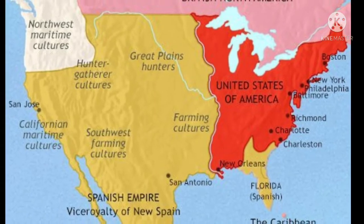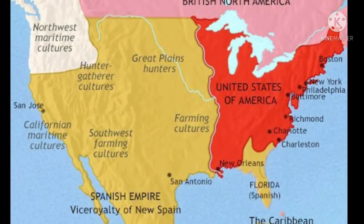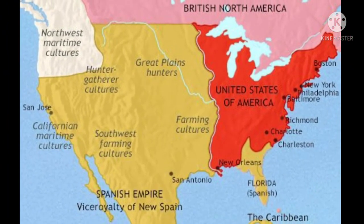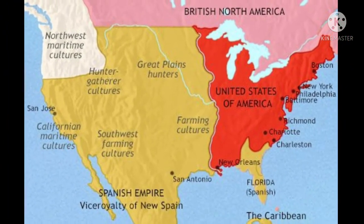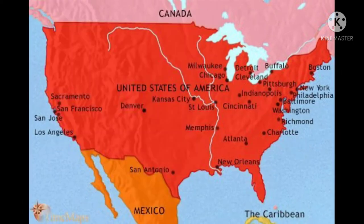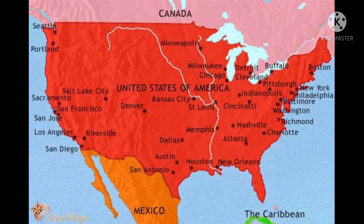During the first 70 years of its existence, the United States extended both its territory and influence in North America, eventually reaching the Pacific Ocean in a wave of expansionism.